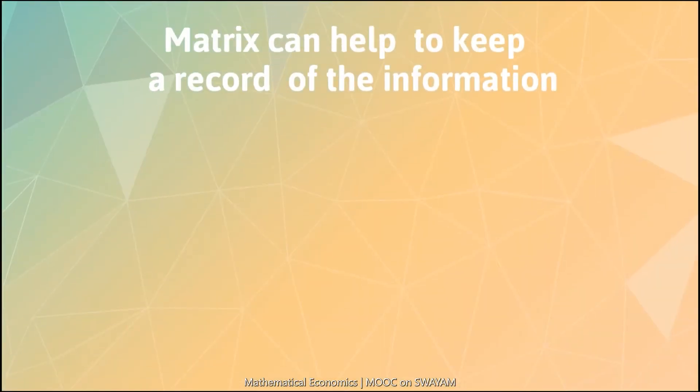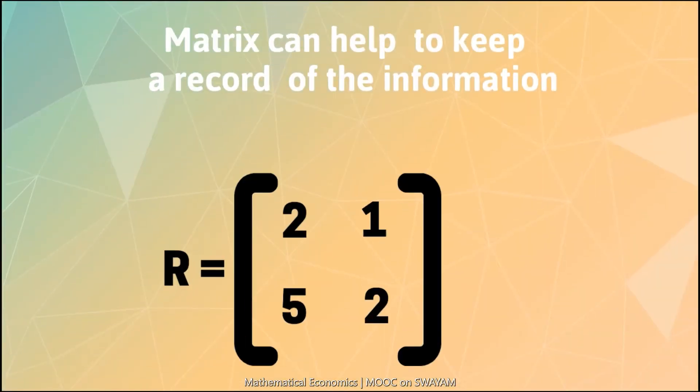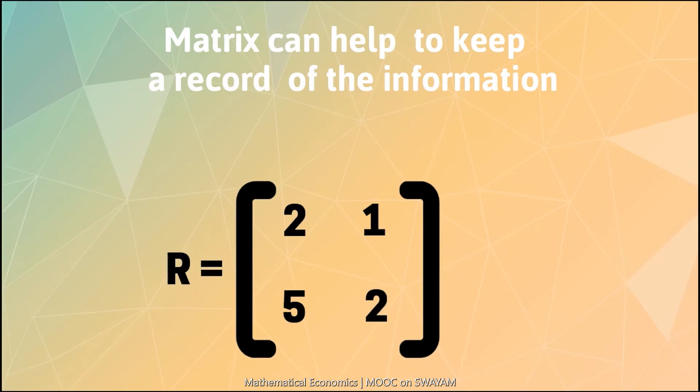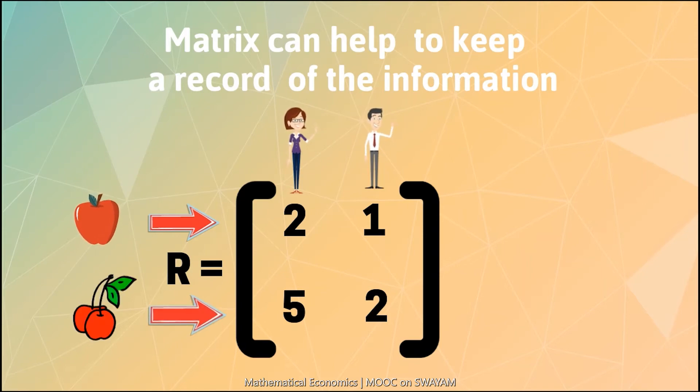Now if we wish to keep a record of this information, we may take the help of the concept of matrix and represent it as follows. The first row shows the number of apples consumed by the woman and the man respectively. The second row shows the number of cherries consumed by the woman and the man respectively.